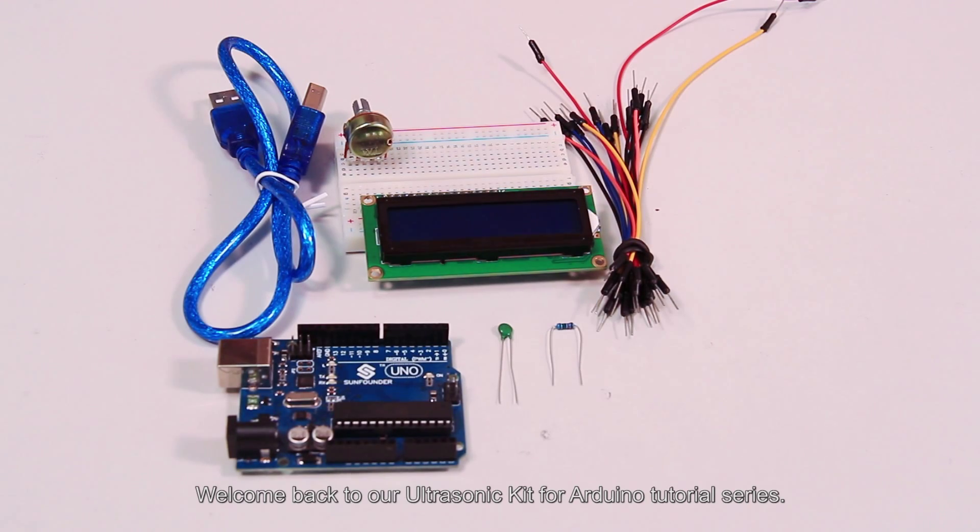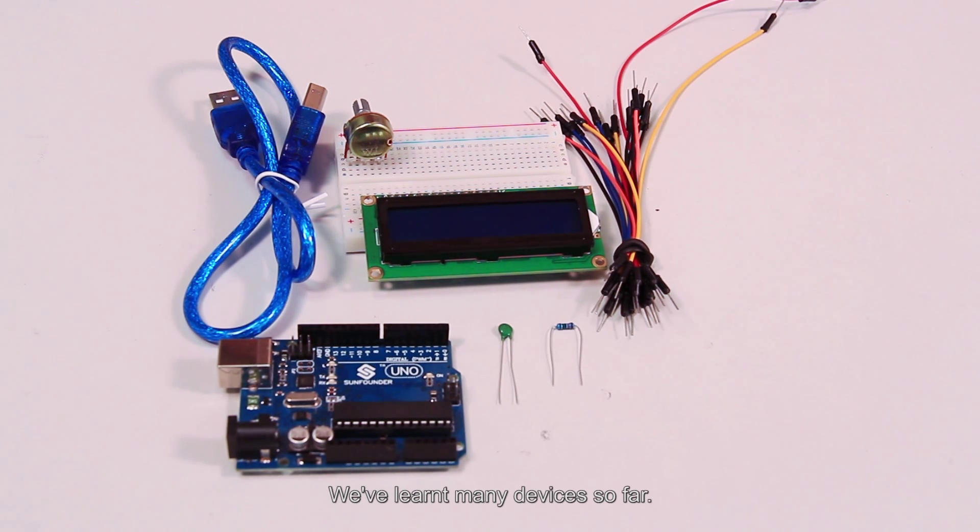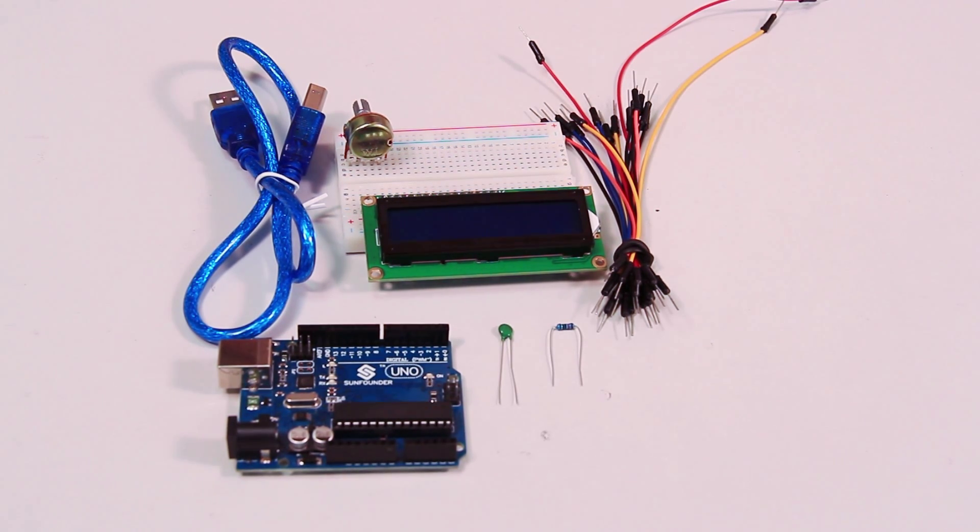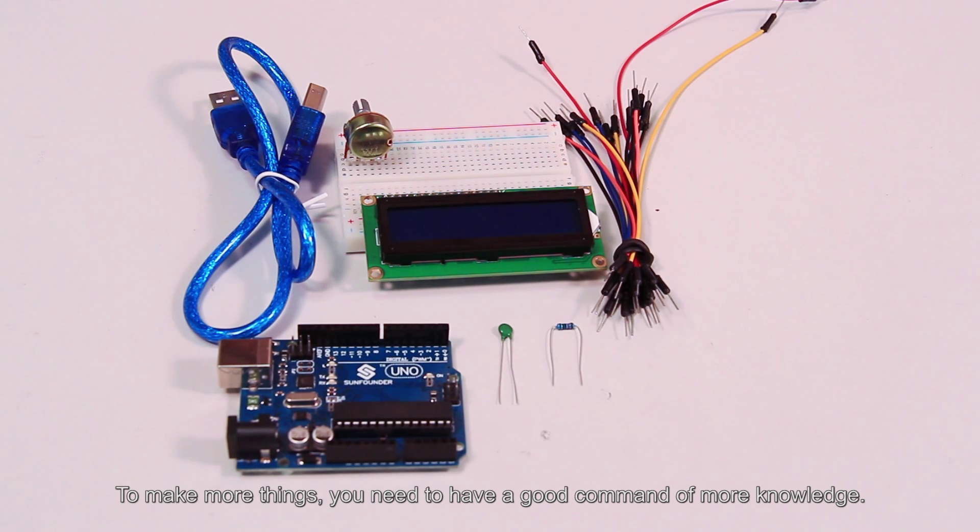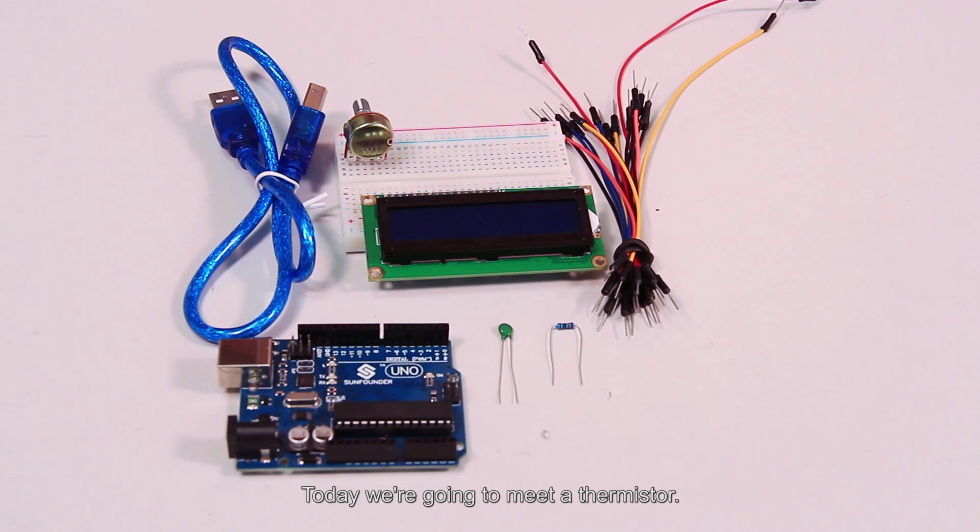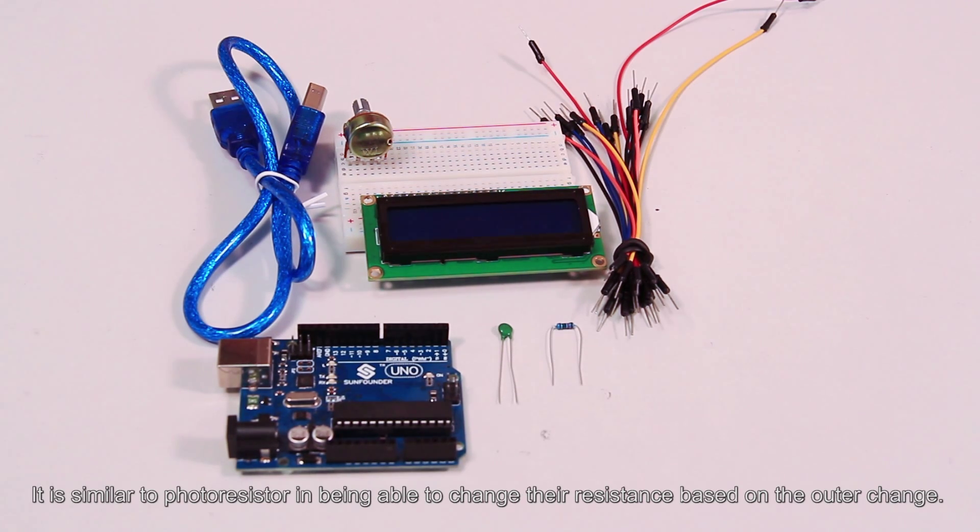Hello everyone, welcome back to our ultrasonic kit for Arduino tutorial series. We've learned many devices so far. To make more things, you need to have a good demand of more knowledge. Today we are going to meet a thermistor. It is similar to photoresistor in being able to change their resistance based on the outer change.